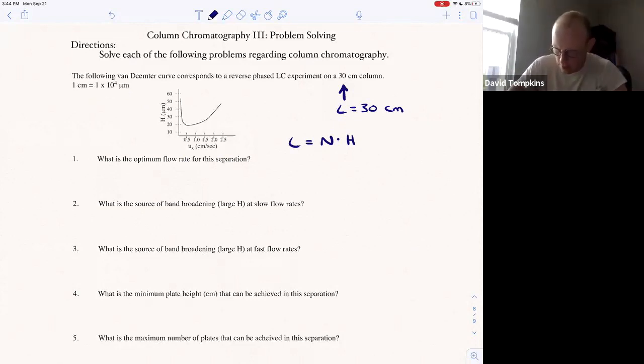So the optimum flow rate first will be that which we have the minimum plate height at.